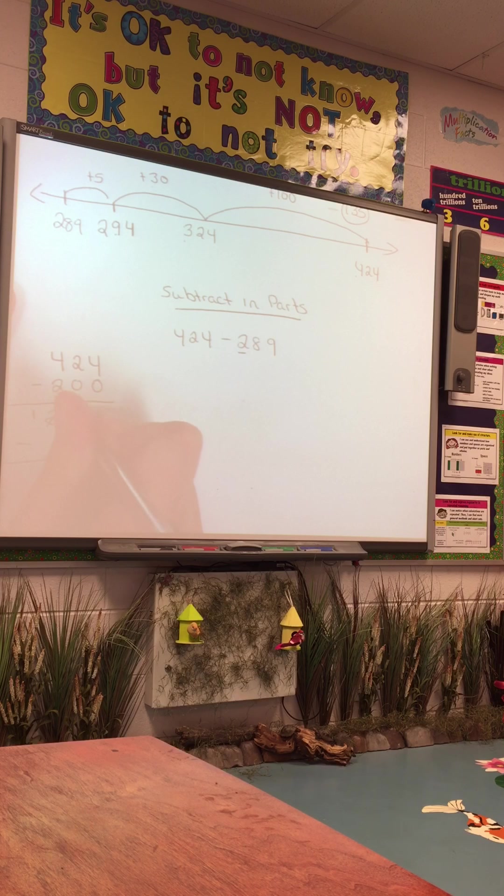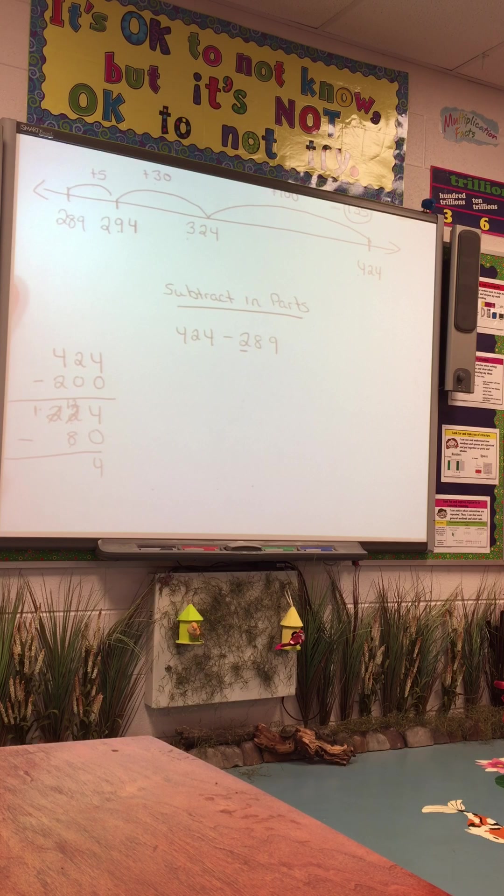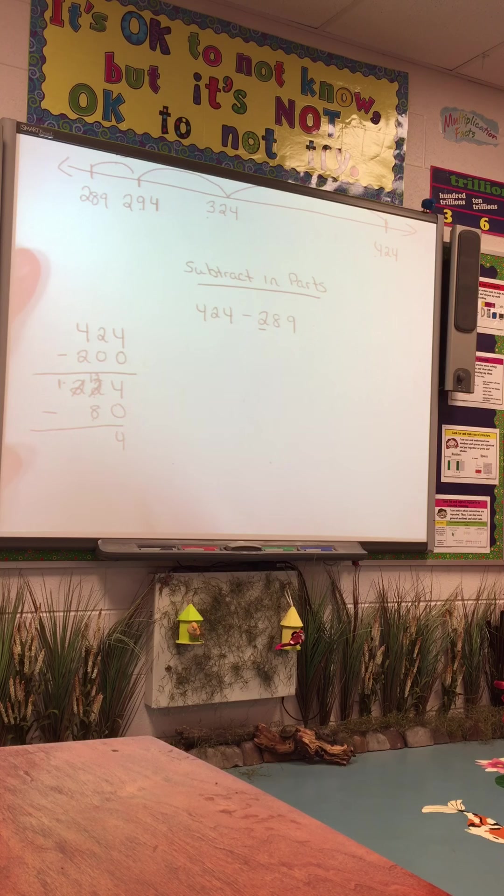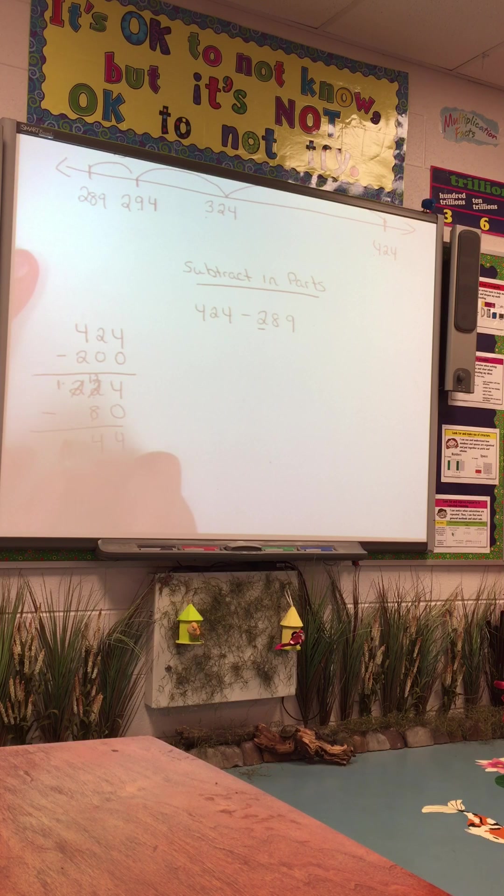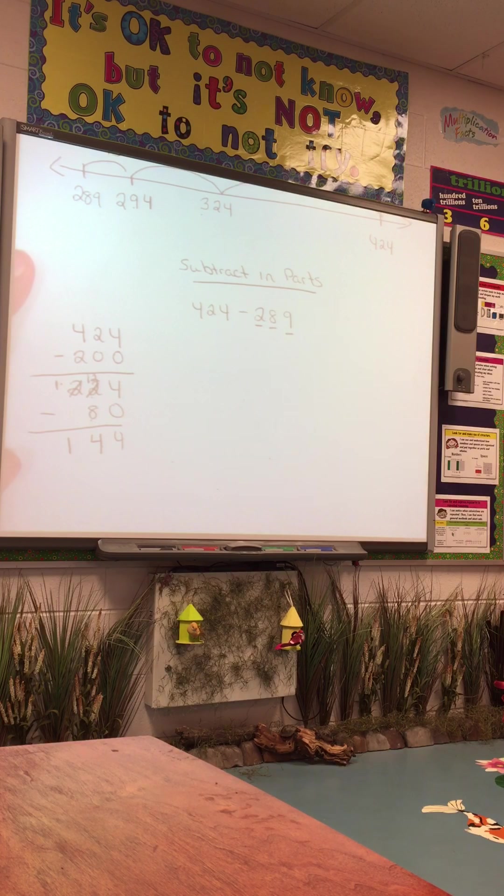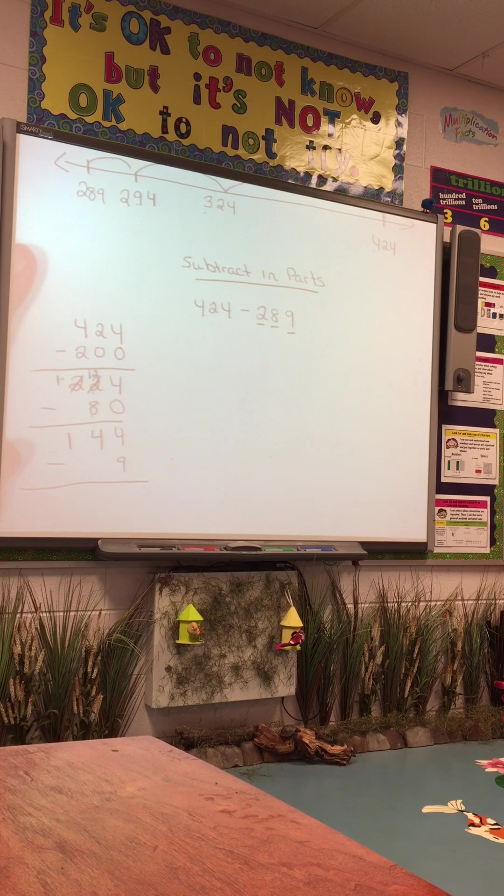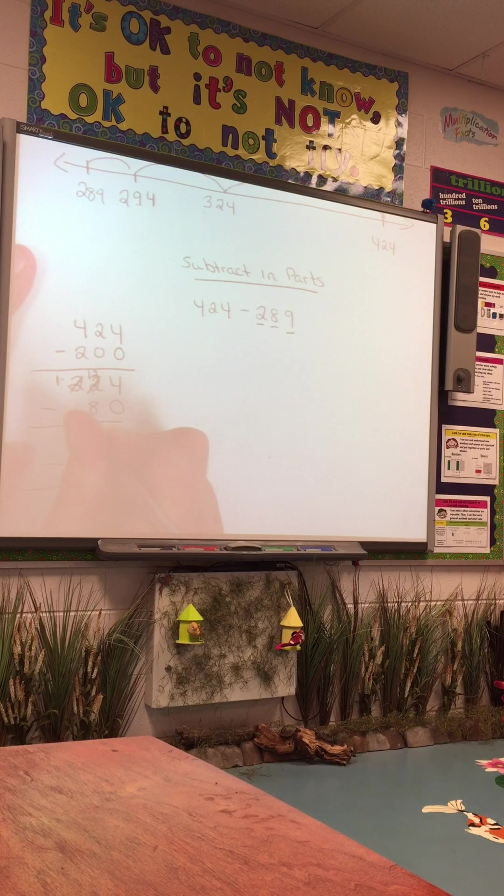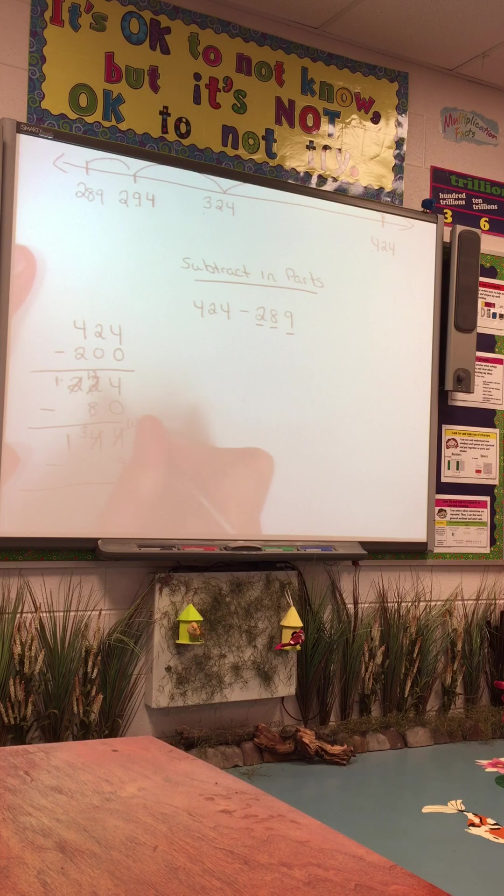4 minus 0 is 4. I can't take 8 tens from 2 tens, so I have to make a trade. I trade 1 hundred for 10 tens, which gives me 12 tens with the 2 tens I had. 12 tens minus 8 equals 4, and then we have 1 hundred left. So we've taken care of the 8 tens. Last, we need to look at the ones, so we're going to minus 9 ones.